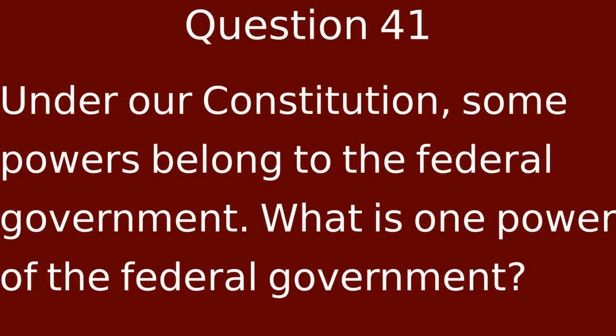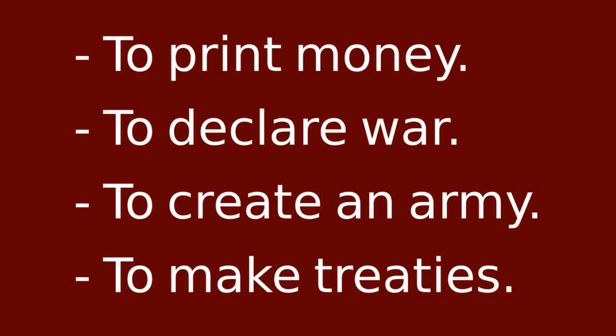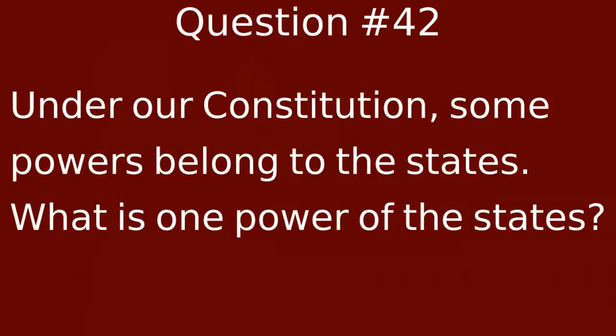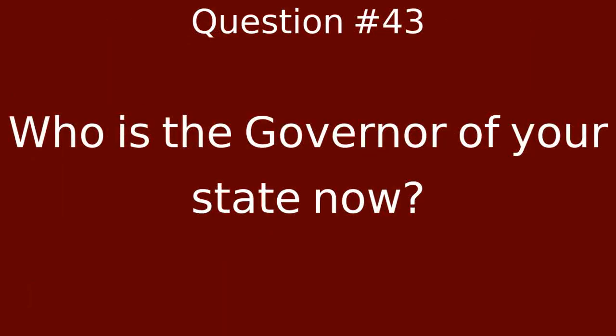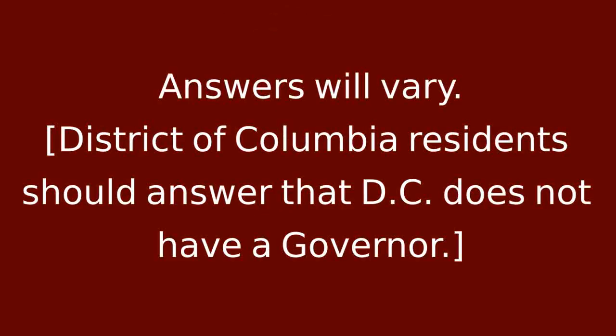Under our Constitution, some powers belong to the federal government. What is one power of the federal government? To make treaties. Under our Constitution, some powers belong to the states. What is one power of the states? Provide schooling and education. Provide protection — police. Provide safety — fire departments. Give a driver's license. Who is the governor of your state now? Answers will vary. District of Columbia residents should answer that D.C. does not have a governor.